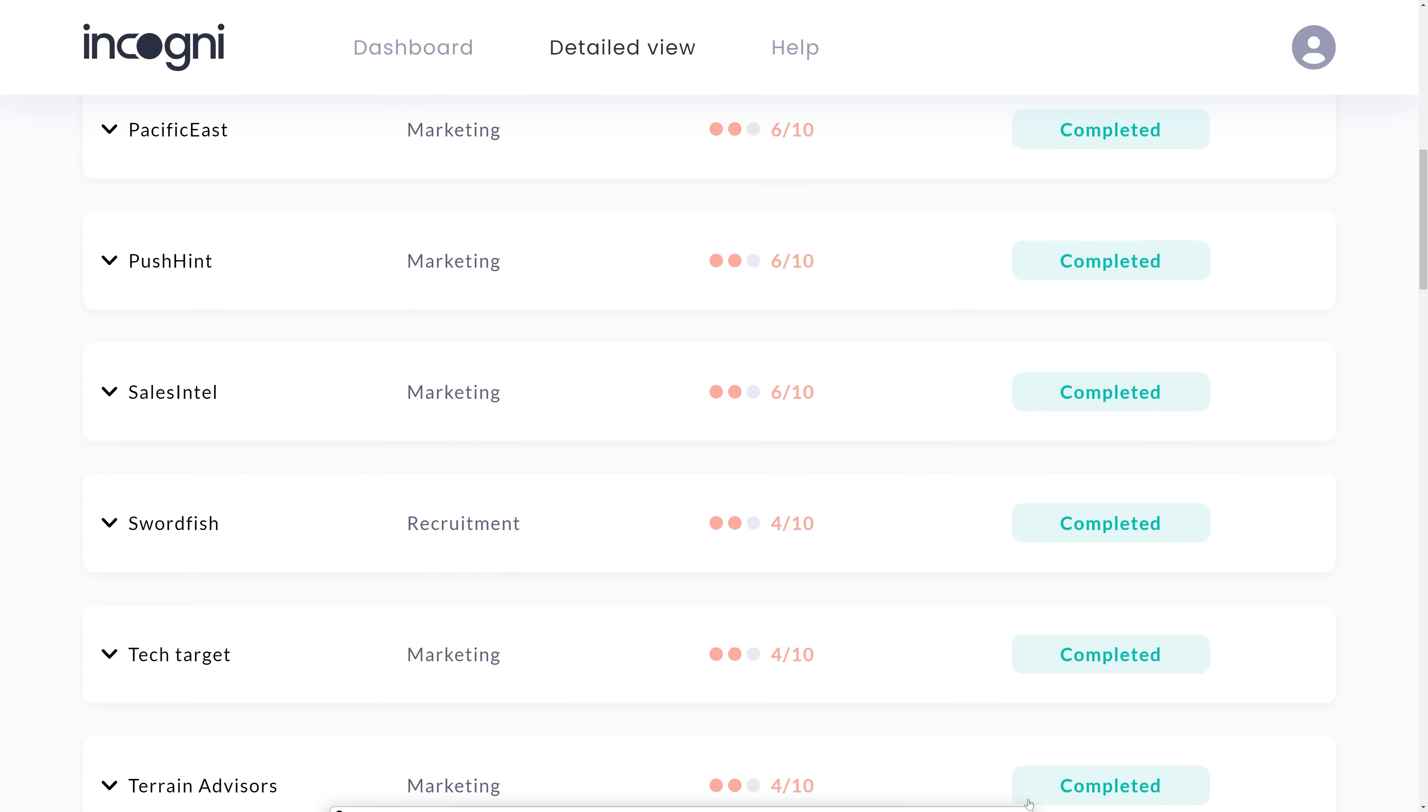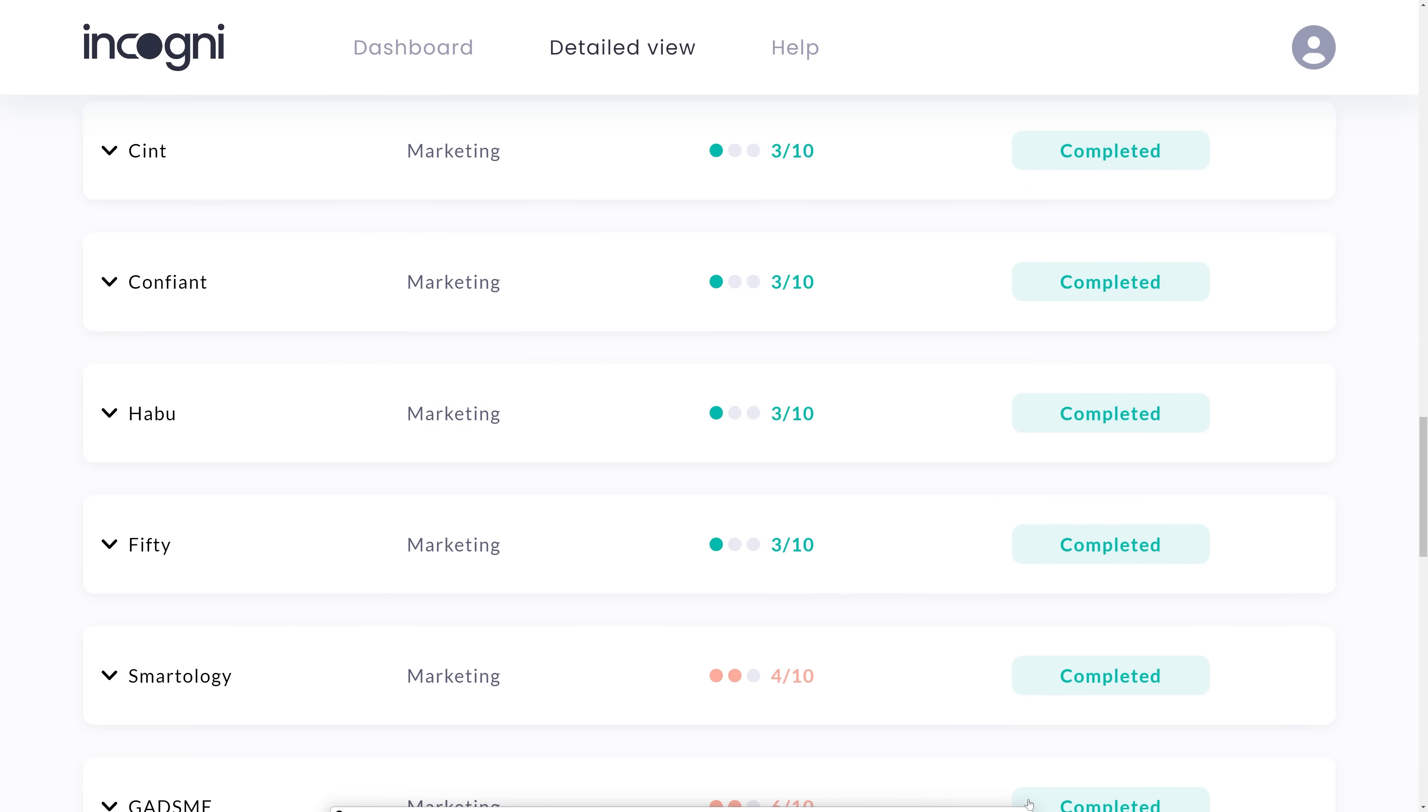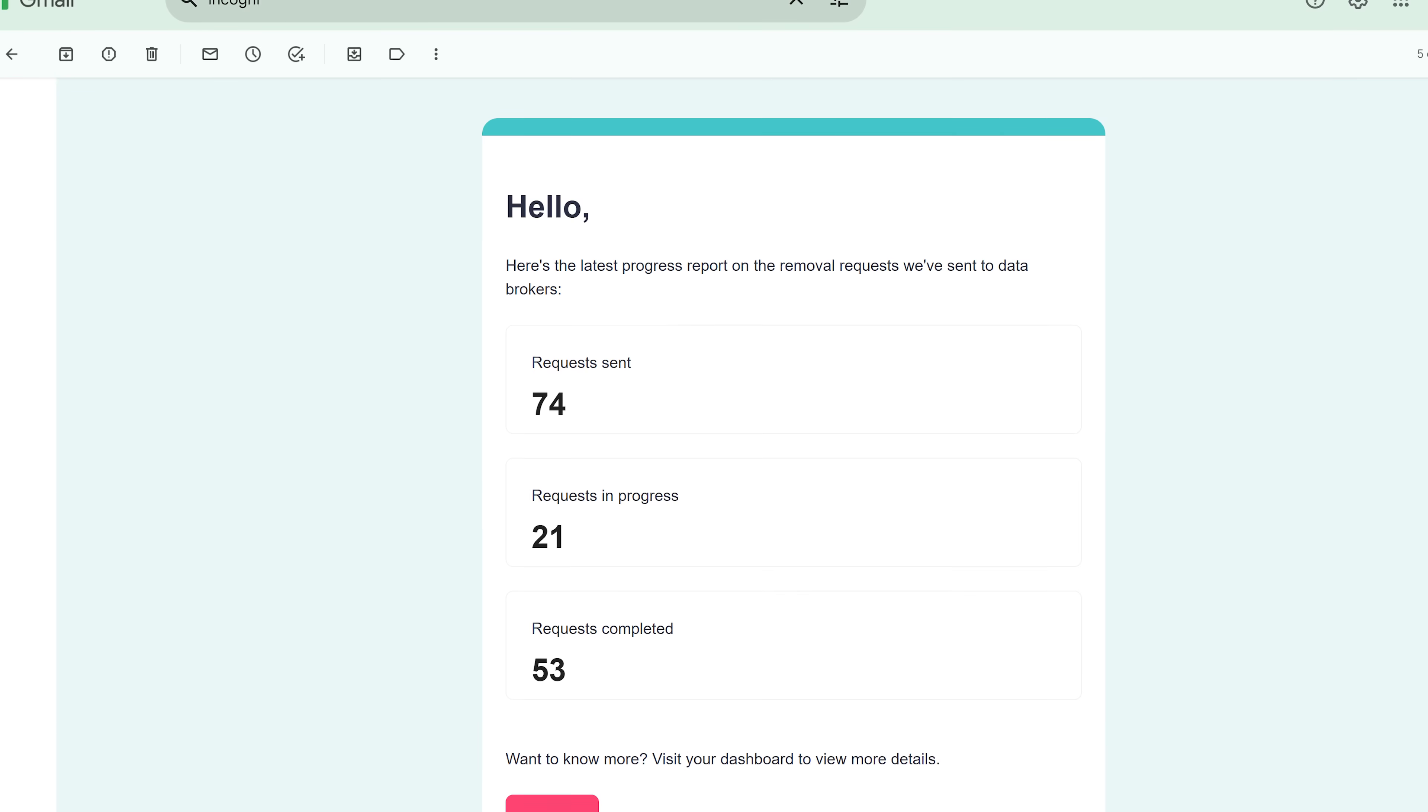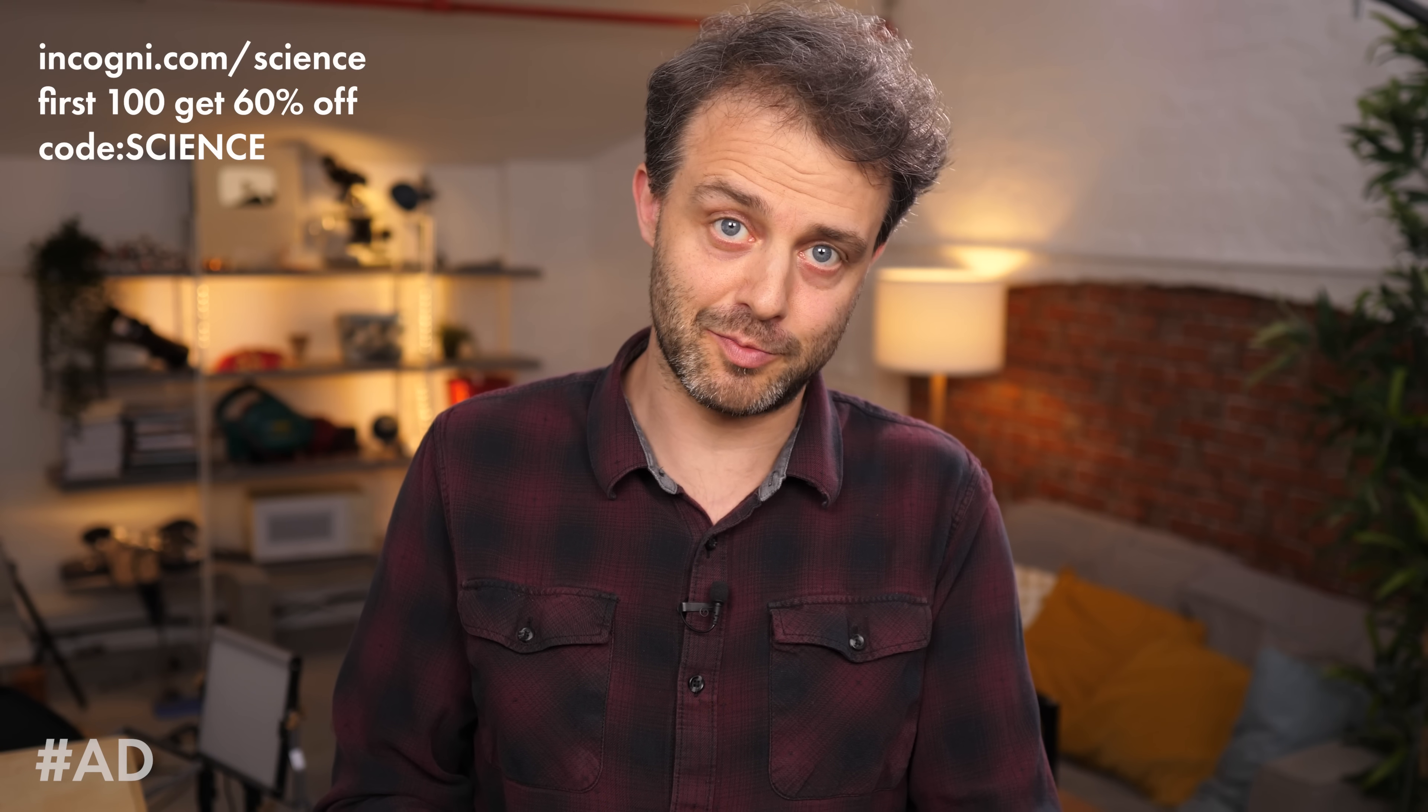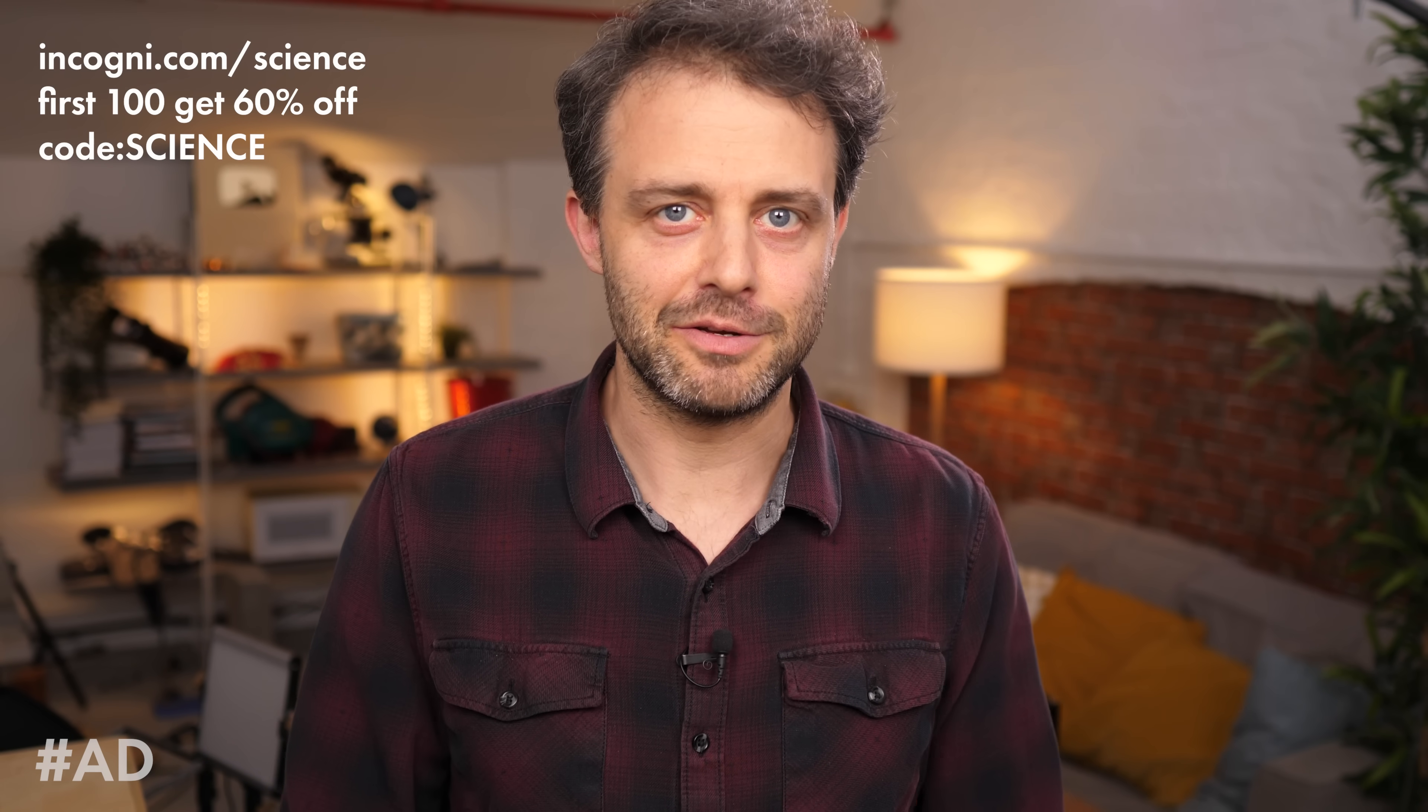And you can see the progress on the dashboard. Look, these are all the companies that now no longer have my data. And honestly, one thing I really like is that they're not constantly banging on about what they're doing for you. They'll send you a progress email once a week if you want them to. Or you can just check on the dashboard. What I've noticed now is that I don't get any more of those weird phone calls from companies that I don't know, but that seem to know a lot about me. And it's just one of those things that I wanted to get done. And now it's done. If you're interested, the offer on this one is really good. The first 100 people to go to incogni.com forward slash science and use promo code science at checkout will get 60% off. The link is also in the description. So check out Incogni today.